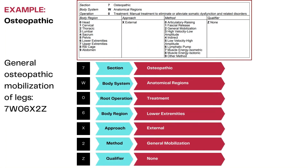This is an example of coding general osteopathic mobilization of the legs. The code would be 7W06X2Z. The body system is anatomical regions, the root operation is treatment, the body region would be lower extremities, the approach is external, the method is general mobilization, and the qualifier is none.